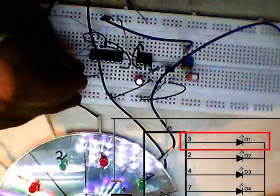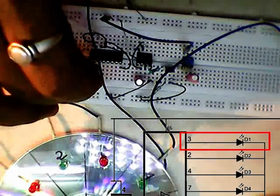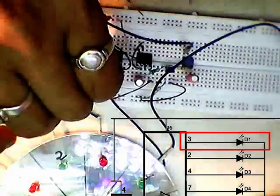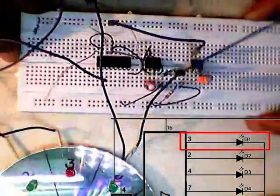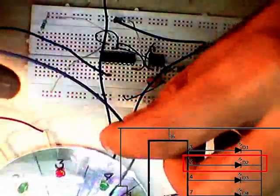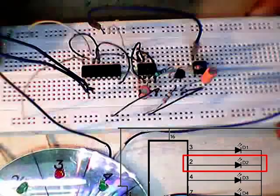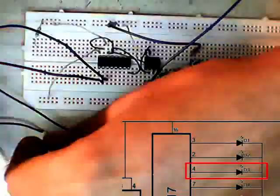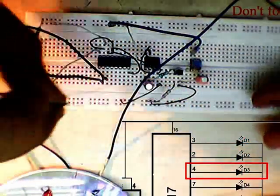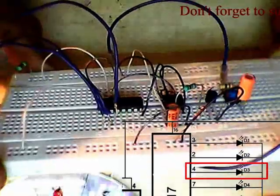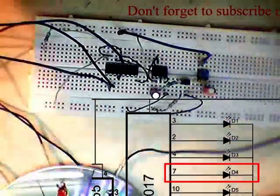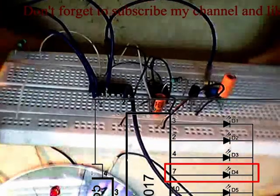Connecting positive pin of LED 1 to pin 3 of the CD4017 IC. Connecting positive pin of LED 2 to pin 2 of the CD4017 IC. Connecting positive pin of LED 5 to pin 2 of the CD4017 IC.